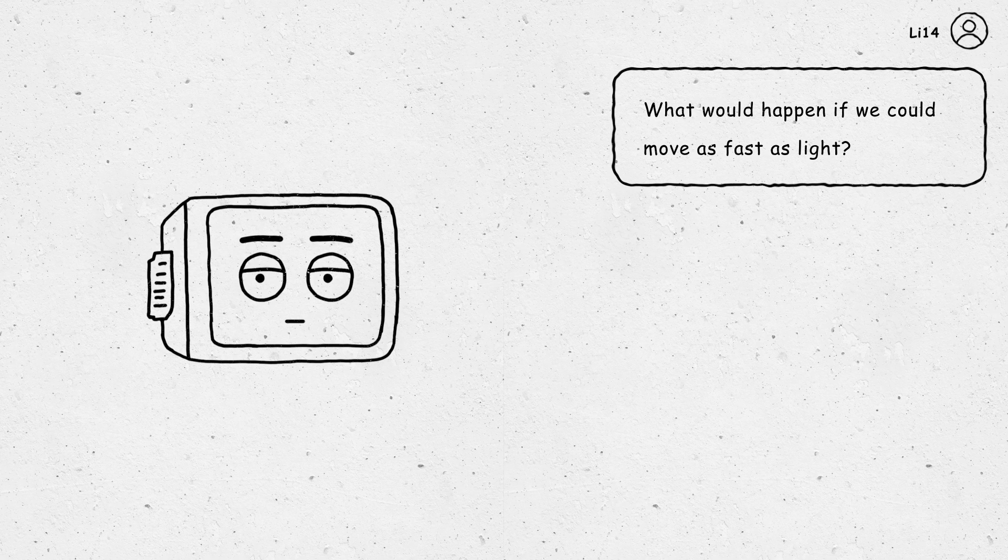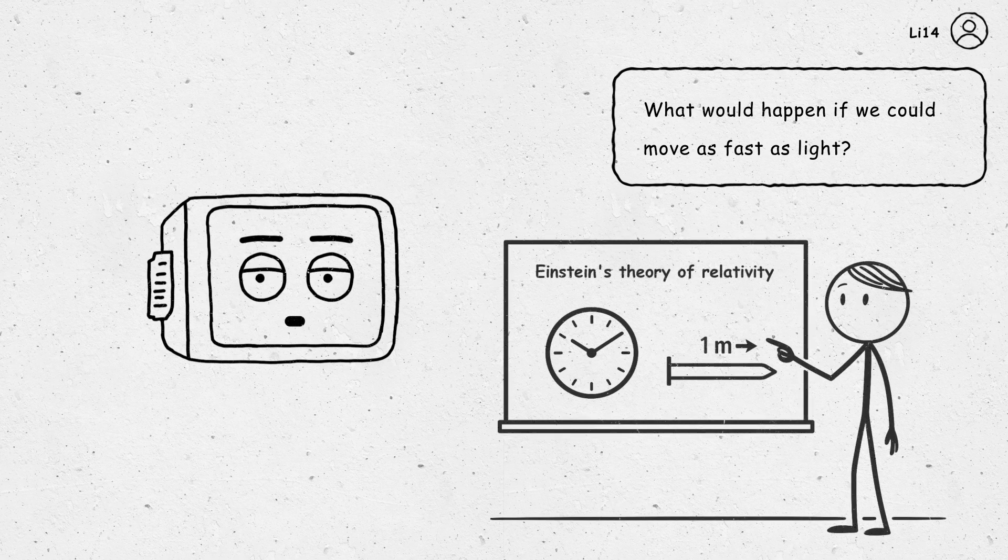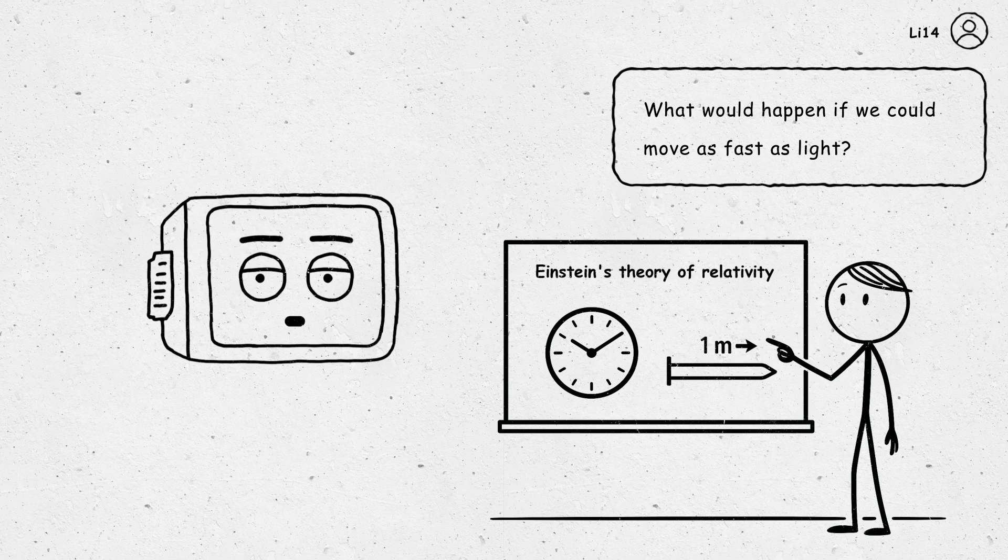What would happen if we could move as fast as light? To answer that, we need to understand Einstein's theory of relativity. Because at light speed, the rules of reality start breaking down.